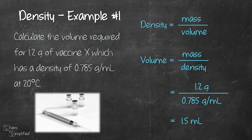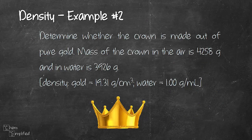Now let's look at another density-related problem that's a little bit more difficult. So we have a test here which is to figure out whether the crown is made out of pure gold or not. We're given two masses: the mass of the crown in the air, that's 4258 grams, and the mass of the crown in water, that's 3926 grams.